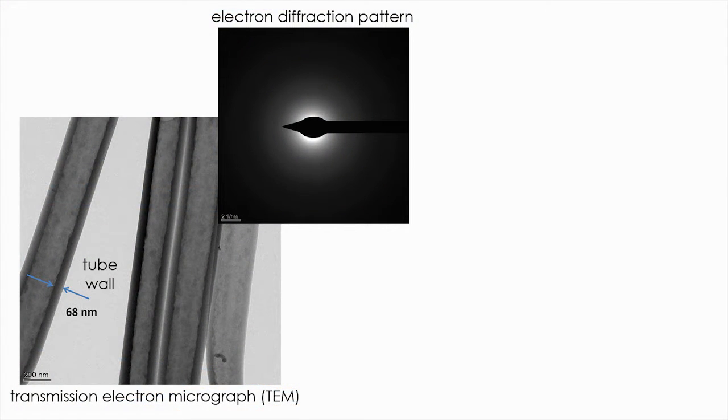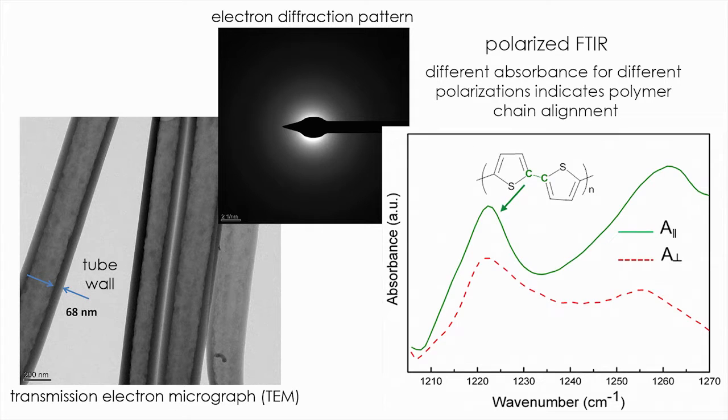Actually our fibers are completely amorphous. We have examined them extensively with TEM and have observed no crystallinity. We use polarized FTIR to show that there is a degree of chain alignment along the tube axis.